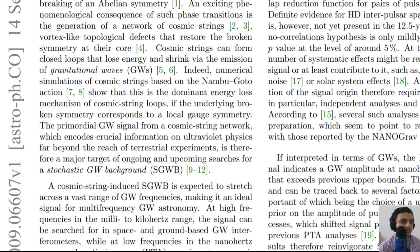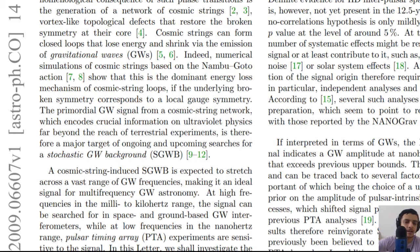Scientists have done numerical simulations of cosmic strings based on the Nambu-Goto action and showed that gravitational wave emission is the dominant loss mechanism of cosmic string loops. The primordial gravitational wave signal from the cosmic string network encodes crucial information on ultraviolet physics far beyond the reach of terrestrial experiments. One main goal of string theory is to show that ultraviolet energy divergence is controllable.